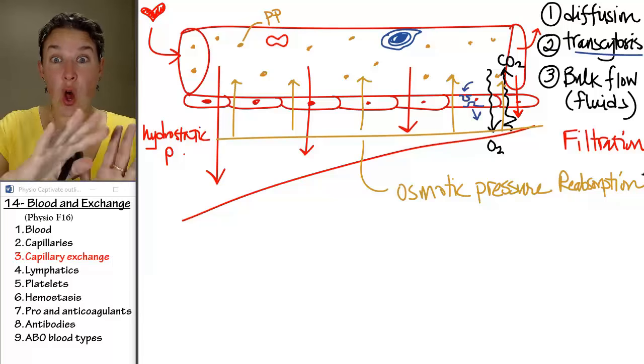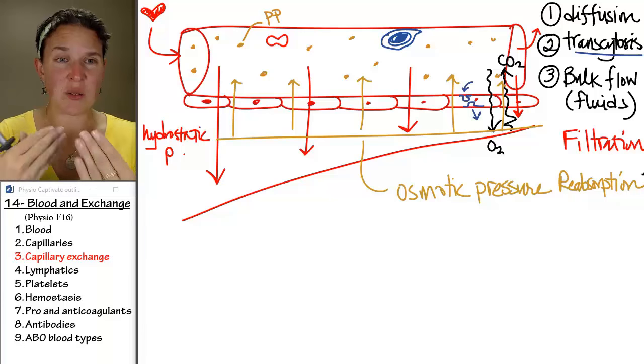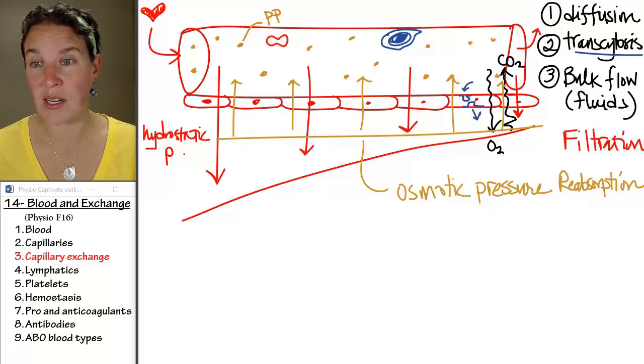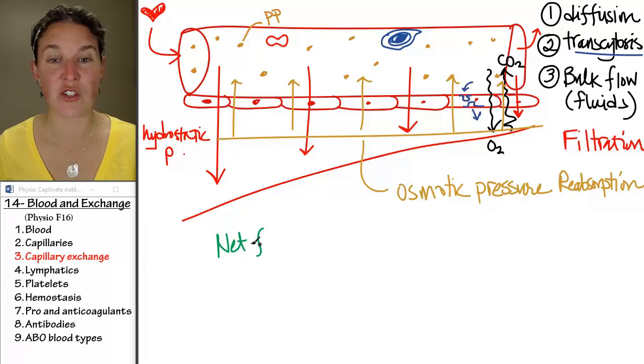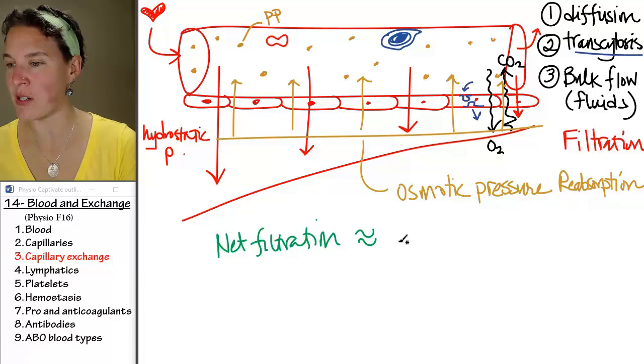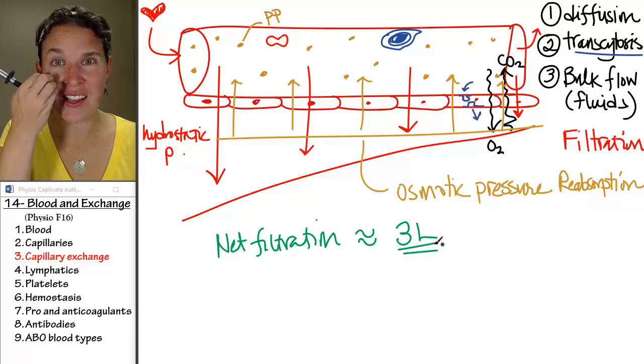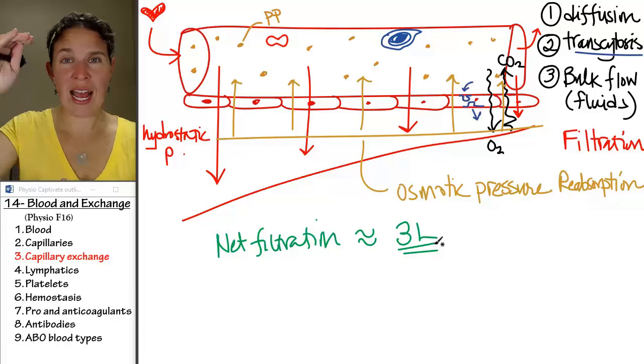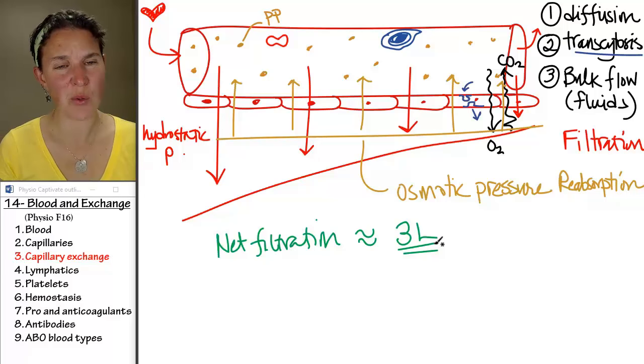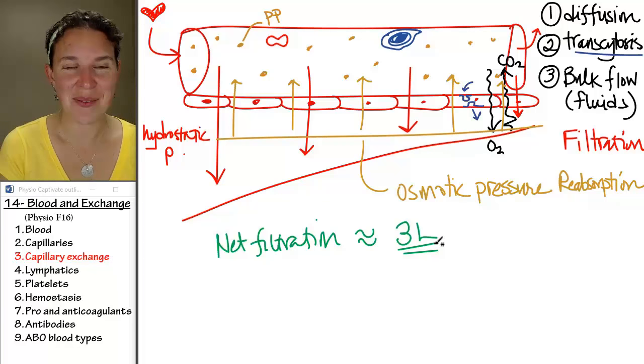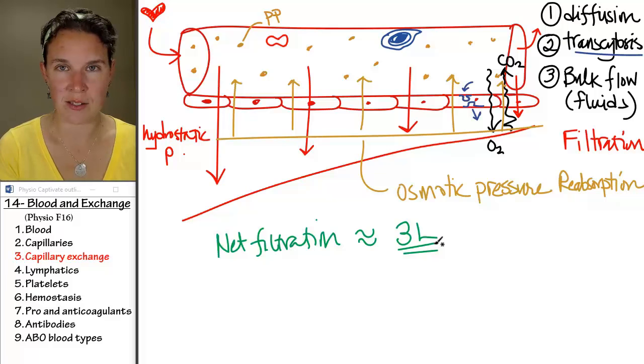In your capillaries, all three of these things allow us to move stuff back and forth. In your capillaries, there is a net filtration of about three liters. Three liters. That's a lot. That's one and a half, two liter pop bottles. That's a lot of fluid that is filtered out net every single day. So, do you think, what would happen to you if that was just in your interstitial fluid? Now, three liters of fluid hanging out in your interstitial fluid.